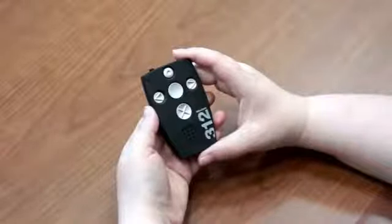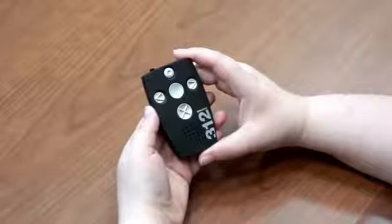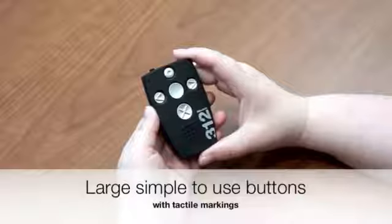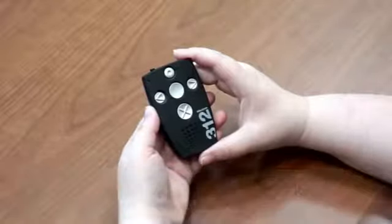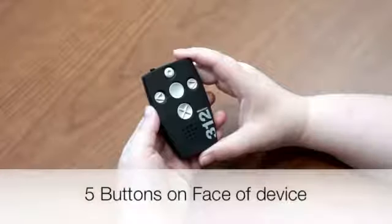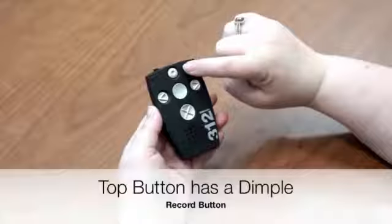The Milestone 312 was designed keeping the low vision user in mind. The device is very simple and features large, simple-to-use buttons that have tactile markings on them. Looking at the face of the device, there are five buttons present. The top button, with the dimple, is the record button.